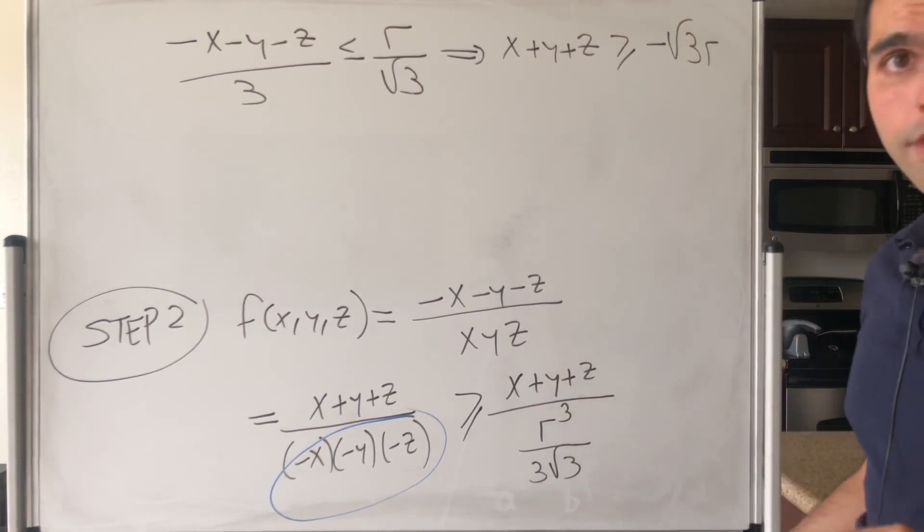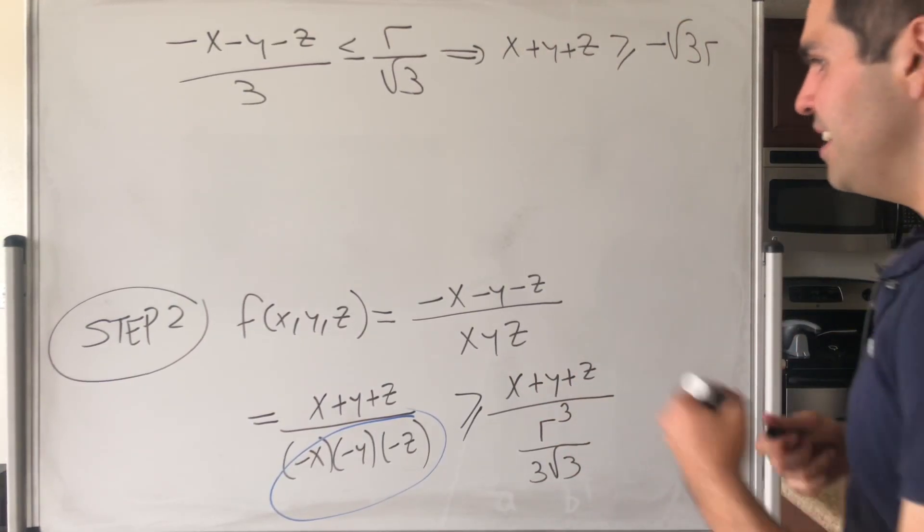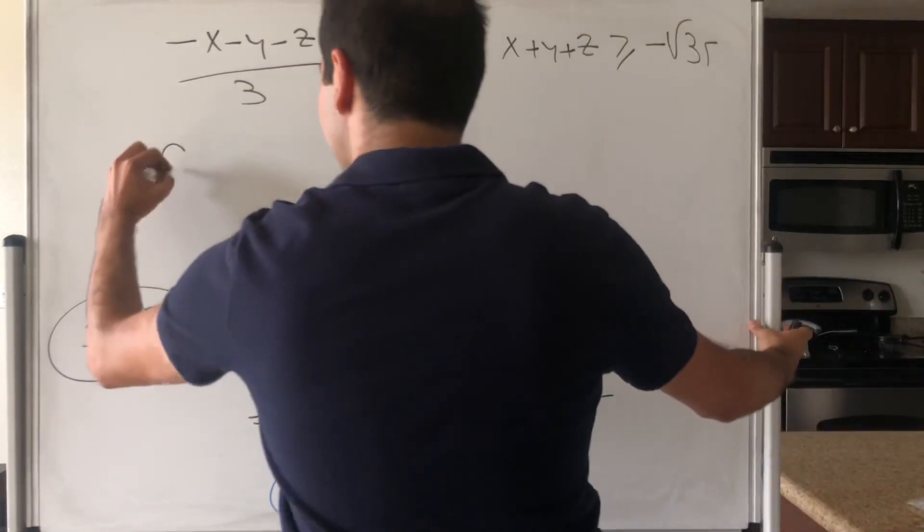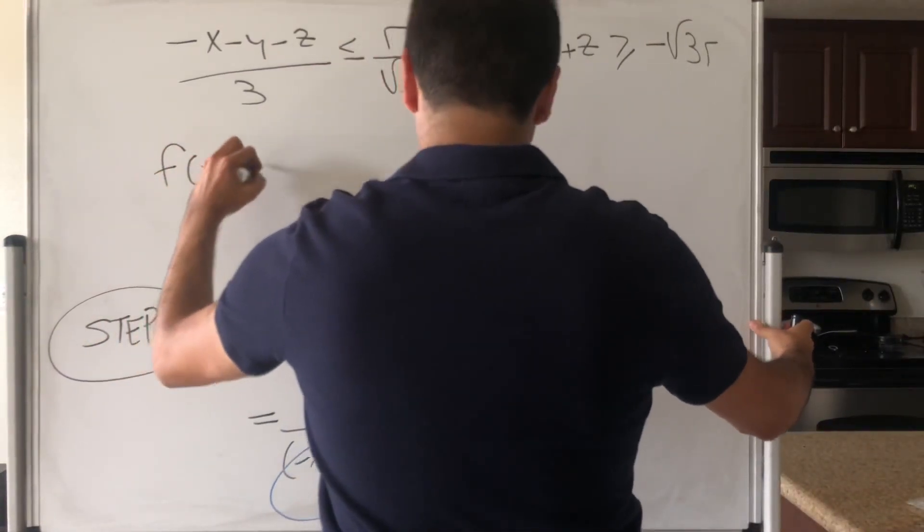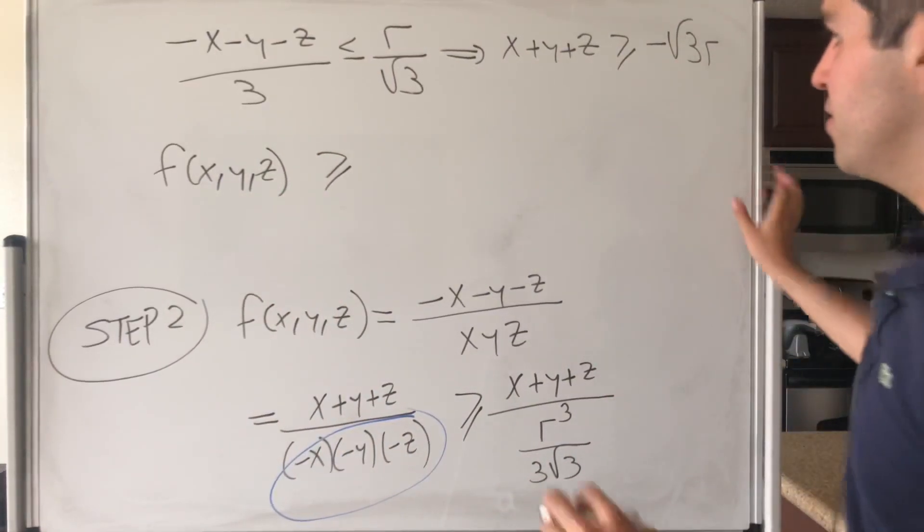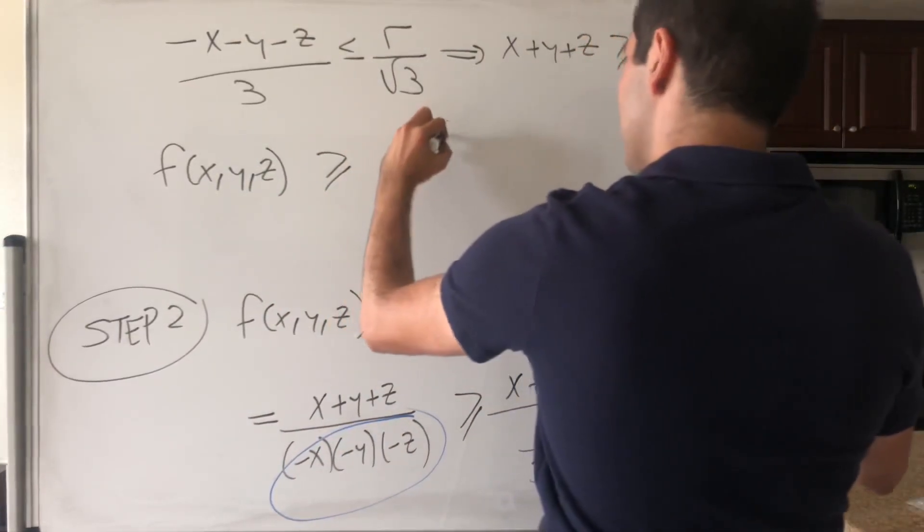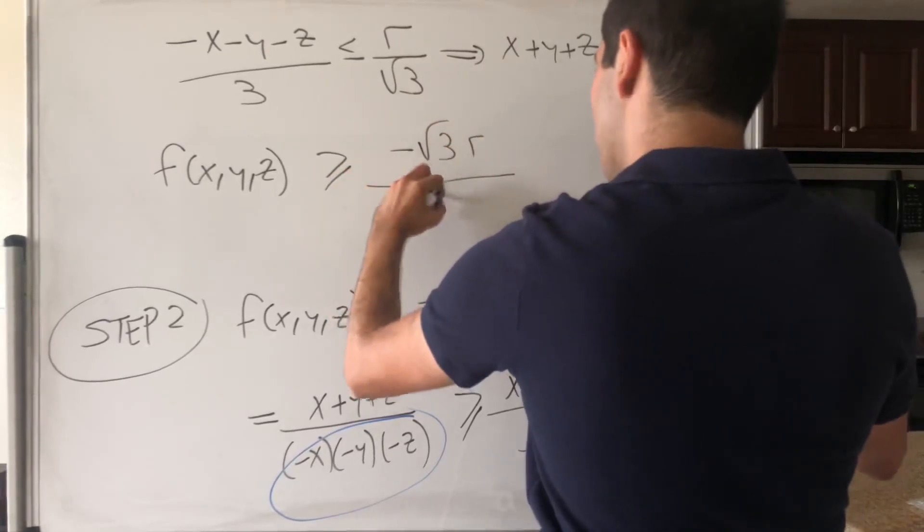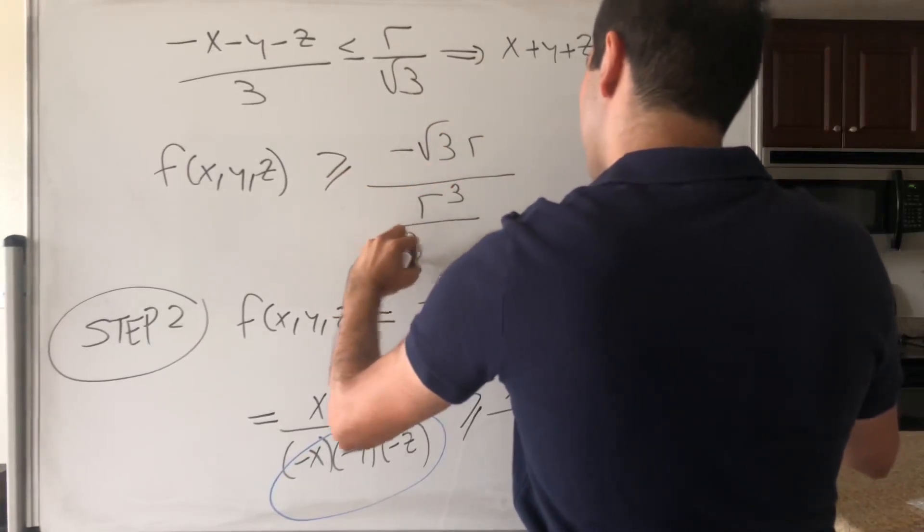So, another greater or equal, which is amazing. So, in the end, what we get, f of x, y, z, again, it's greater or equal to this gibberish, so minus square root of 3 r over r cubed over 3 square root of 3.